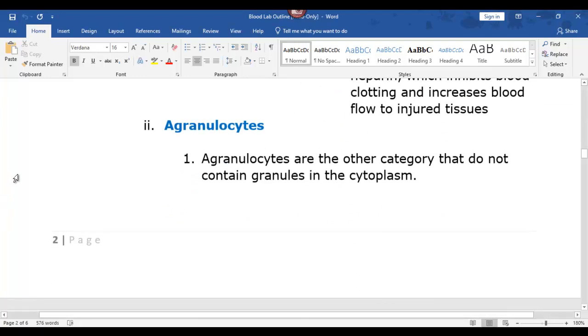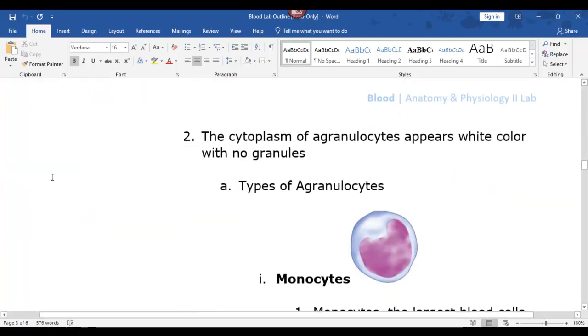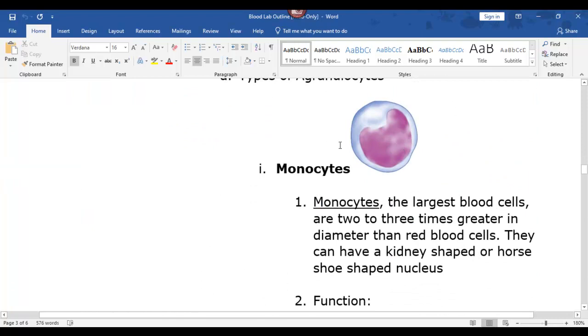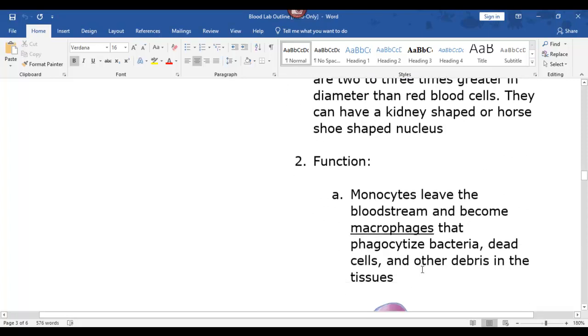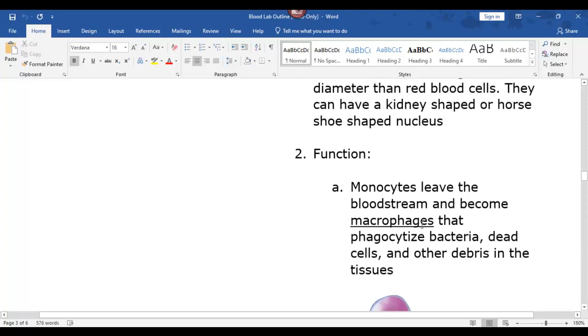The agranulocytes, there's only two of these we cover: lymphocytes and monocytes. Here's a monocyte, big giant pac-man cell. They also—see down here, says they become macrophages. They move in and out of tissues and they eat anything they don't recognize. They phagocytize bacteria, dead cells, parts, everything.